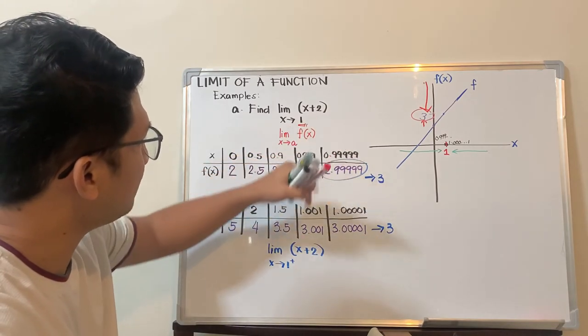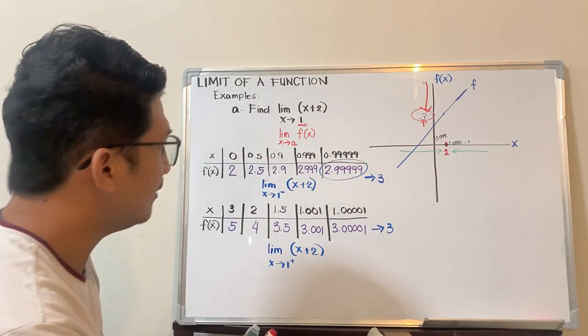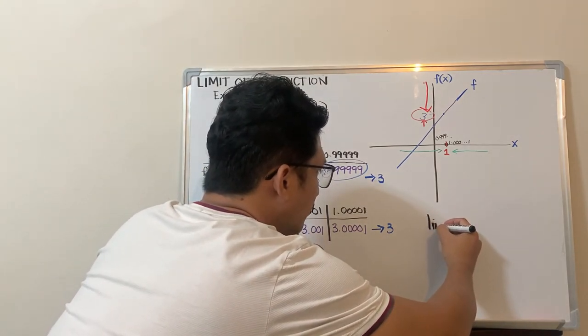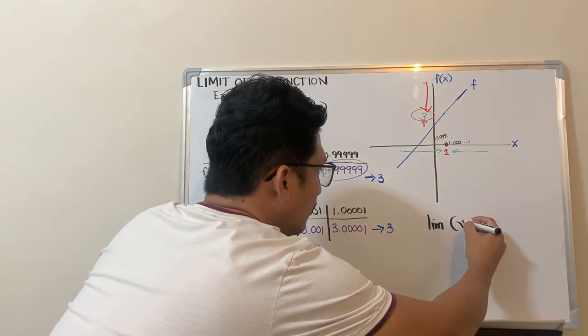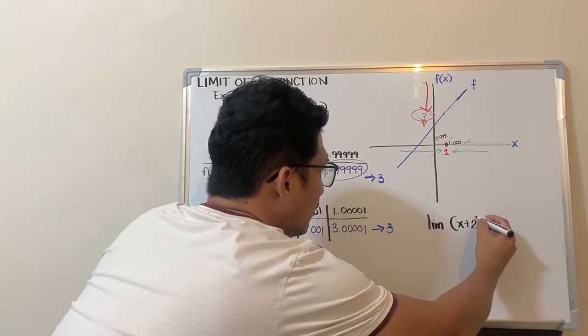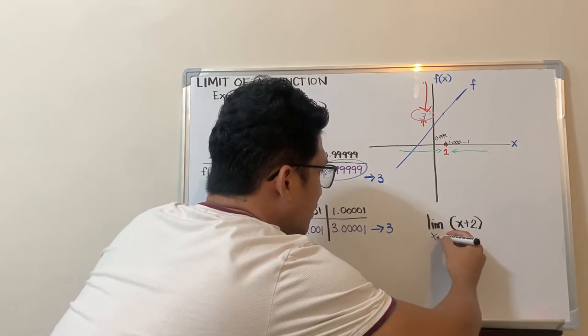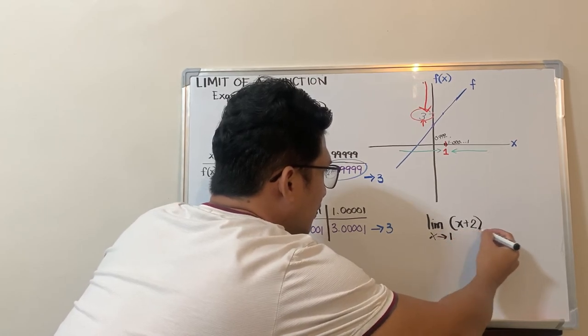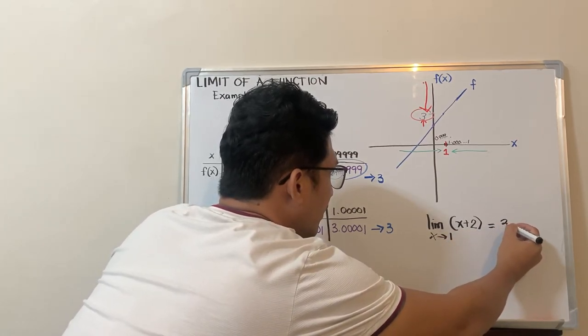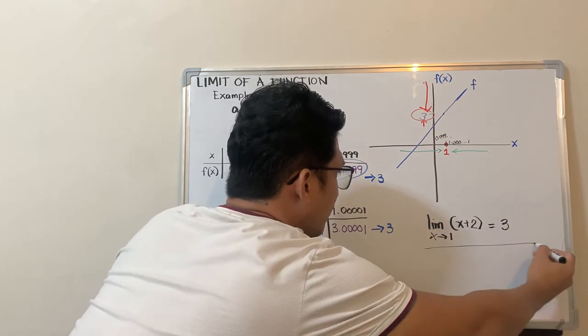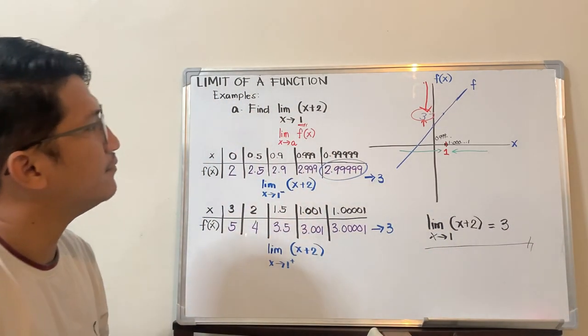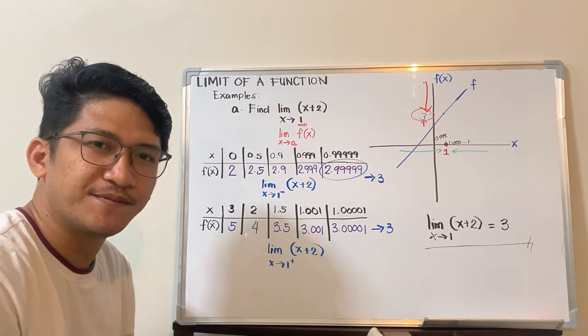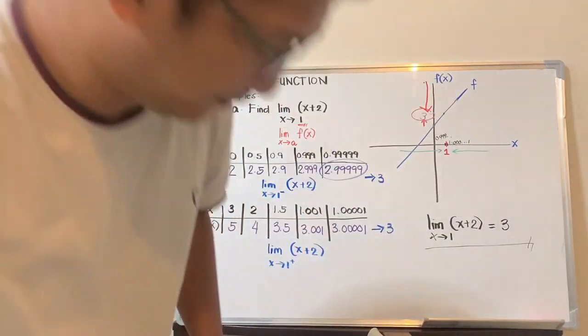Therefore, the limit of x plus 2 as x approaches 1 is equal to 3. So this will be our final answer. This is for example 1.